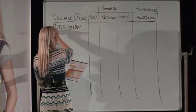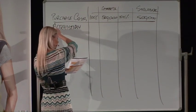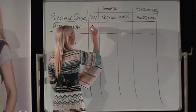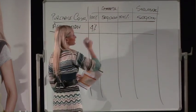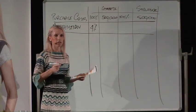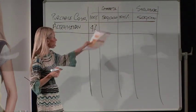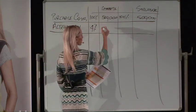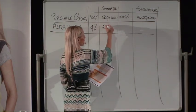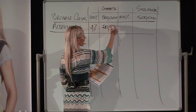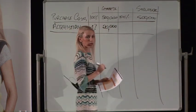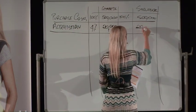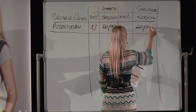Acquisition costs are your legals and stamp duty, and they typically are about 4% of the purchase price. So 4% of $500,000 gives you $20,000. Allocate $20,000 for your acquisition cost and that will cover all your stamp duty and legals in acquiring that property.